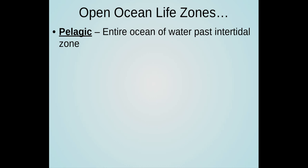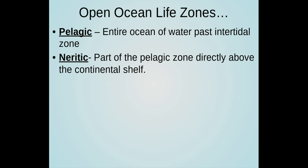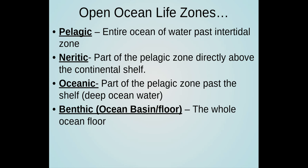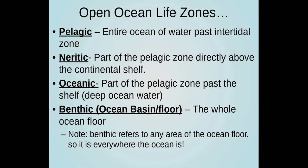Open ocean life zones: pelagic is the entire ocean of water past the intertidal zone. Neritic is the part of the pelagic zone directly above the continental shelf. Oceanic is a part of the pelagic zone past the shelf, deep ocean water. And benthic: the whole ocean floor. Note that benthic refers to any area of the ocean floor, so it is everywhere that the ocean is.